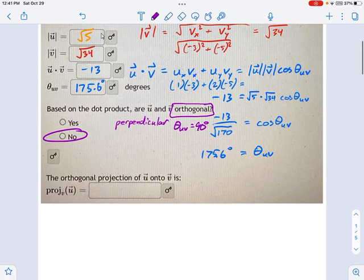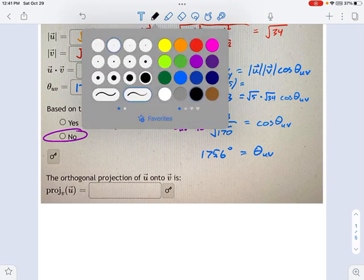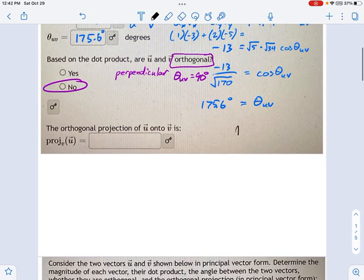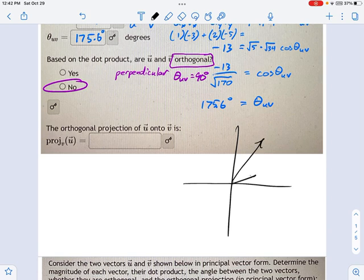Now, one last part here. The orthogonal projection of u onto v. Kind of complicated equation. Let me draw what we're talking about here first. If I have two vectors. Here's one. Here's another one right there. The orthogonal projection of one vector onto the other. Let's say the orthogonal projection of u onto v like this. This is not the picture above. I'm just giving you an idea. It would be this. It would be the amount of u that goes in the same direction as v. So you would basically just drop a perpendicular line down to v and say how much of u is in agreement with v. That's the idea.